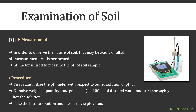Then comes pH measurement. In order to observe the nature of soil — whether acidic or alkaline — a pH measurement test is performed. A pH meter is used. Procedure: first, standardize the pH meter with respect to a buffer solution at pH 7. Then dissolve 1 gram of soil in 100 ml of distilled water, stir thoroughly, and filter the solution.